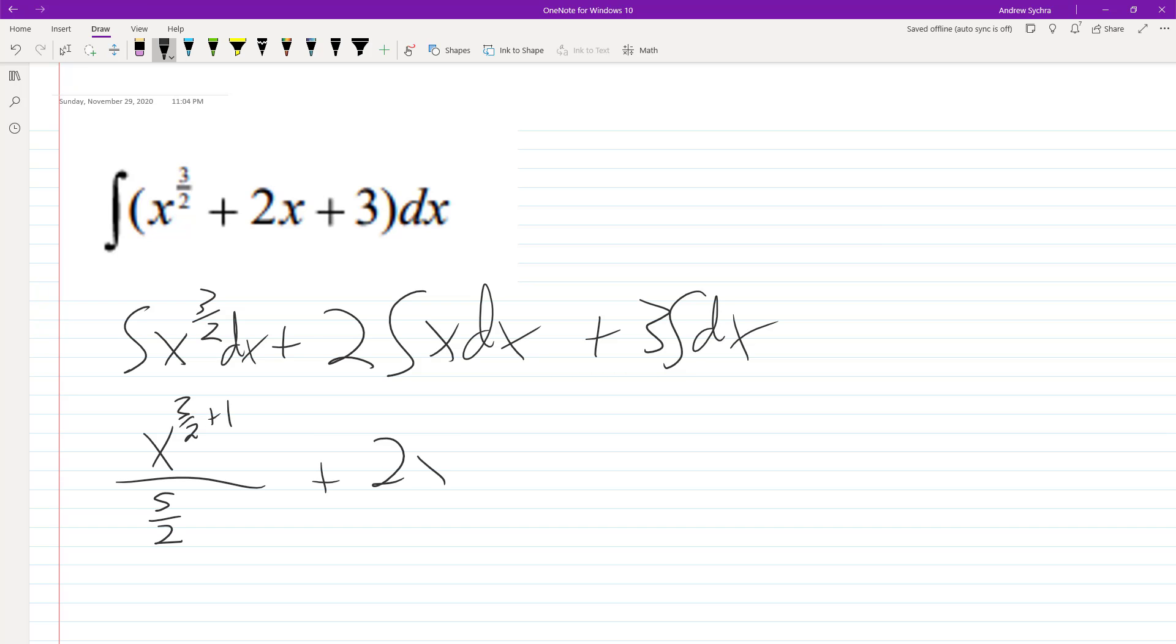Plus 2, x raised to the, this is 1 plus 1, so divided by 2, because 1 plus 1, plus 3, x raised to the 0 plus 1 over 0 plus 1, plus our general constant c.